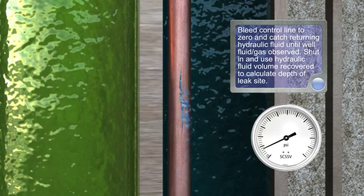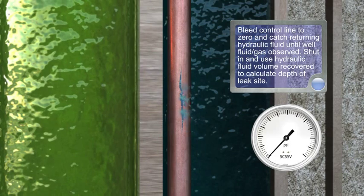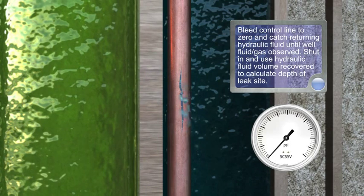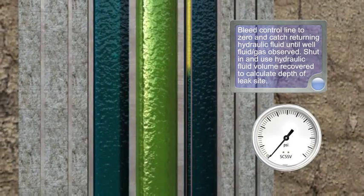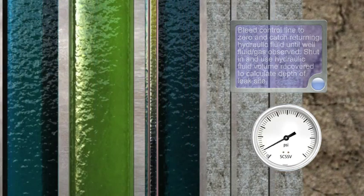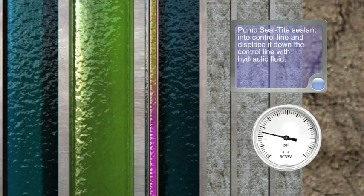Bleed control line to zero and catch returning hydraulic fluid until well fluid gas is observed. Shut in and use hydraulic fluid volume recovered to calculate depth of leak site.